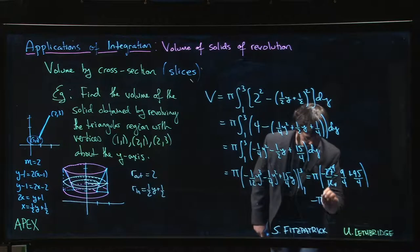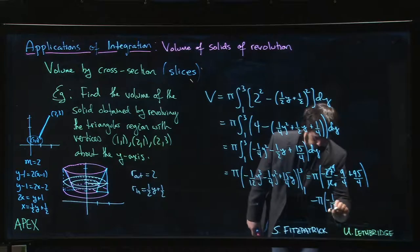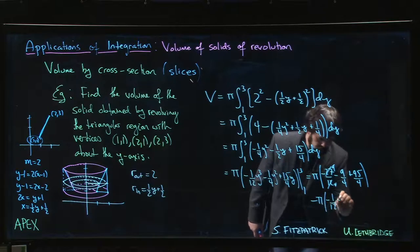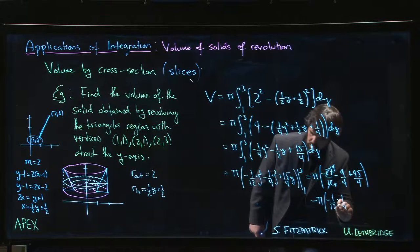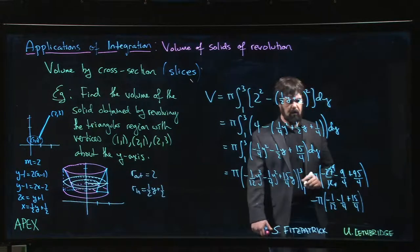That's upper limit minus the lower limit. So we put in 1, we get minus 1/12 minus 1/4 plus 15/4.